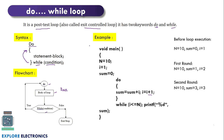Before the loop execution, n was 10, sum was initialized to 0, and counter i is 1. In the first round, sum will be 1 because 0 plus 1. At the end of the first iteration, sum is 1 and i is incremented to 2. In the second round, sum will be incremented to 3 because 1 plus 2 equals 3, and i is incremented to 3. Similarly, it will be executed till the 10th round, and at the end we will have the sum of 10 numbers.